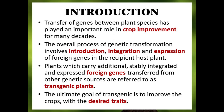Transfer of genes between plant species has played an important role in crop improvement for many decades. Plant improvement, whether as a result of natural selection or the efforts of plant breeders, has always relied upon evolving, evaluating and selecting the right combination of alleles. Useful traits such as resistance to disease, insects and pests have been transferred to crop varieties from non-cultivated plants. Since 1970, rapid progress has been made in developing tools for the manipulation of genetic information in plants by recombinant DNA method. The overall process of genetic transformation involves introduction, integration and expression of foreign genes in the recipient host plant.